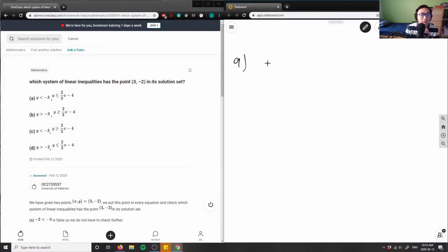This is a little bit of screen time now. So let's see which system of linear inequalities has the point (3, -2) in its solution set. We're given options A, B, C, and D. So we have to verify all these ones here. Let's look at A first.